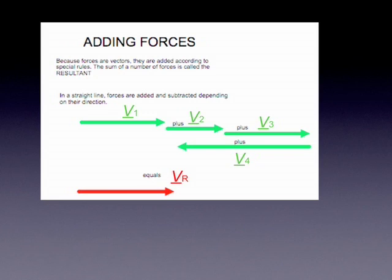So we add each vector on the nose of the previous one. The resultant is the red vector, Vr, and it begins at the beginning of the green vector, V1, and ends at the end of the final green vector, V4. That's how you add vectors. This works for forces, but it would also work for velocities or displacements.